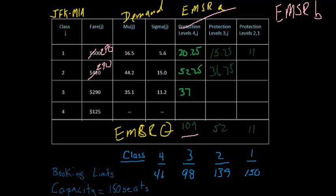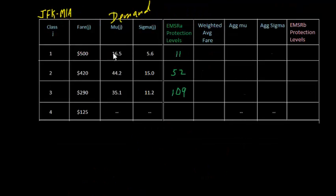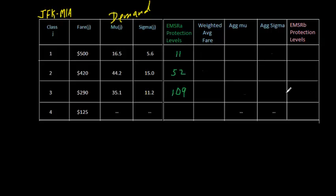So the way we're going to do this is I've created another table. I've condensed the information into a new table, taken our EMSR protection levels and written them in one column. This is our old information — our fares and demand statistics. On the other side, we're going to calculate our weighted averages and aggregate our demand statistics together so that we can calculate EMSR-B protection levels. I'm not going to try to create a lot of notation and subscripts here because it just gets too messy. When we calculate this weighted average, it's going to be for classes 3, 2, and 1. Let's start with the weighted averages.